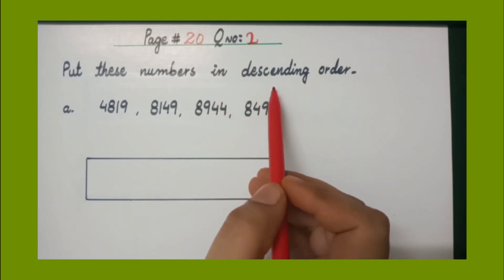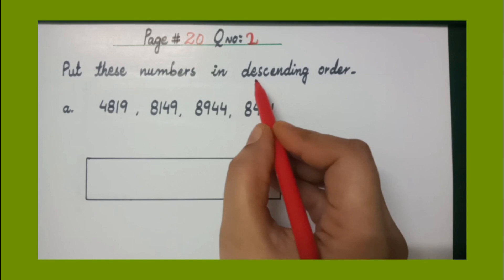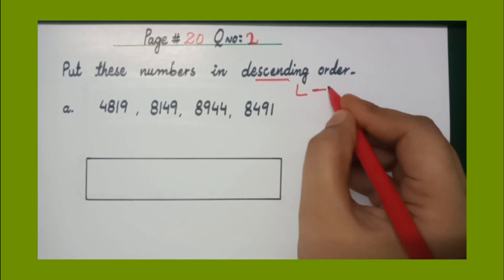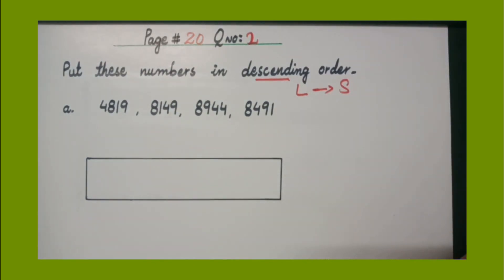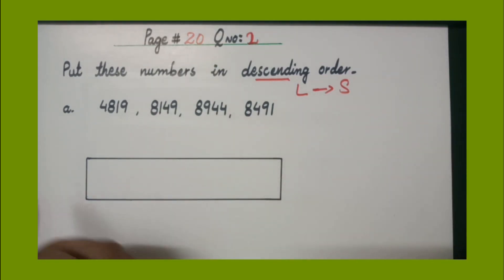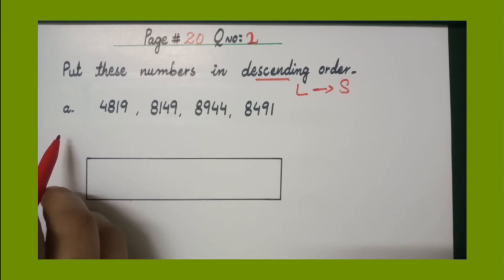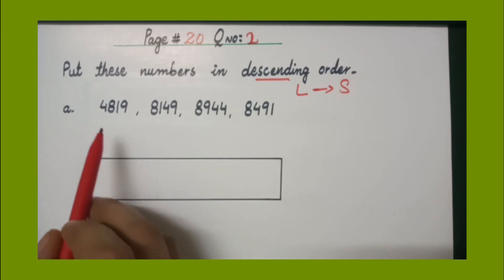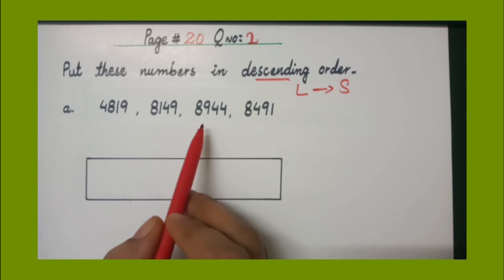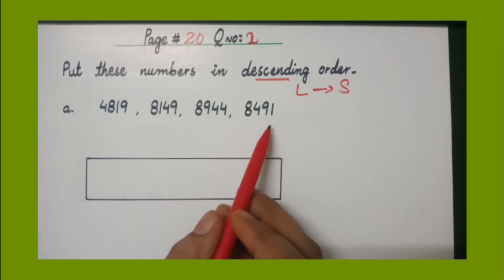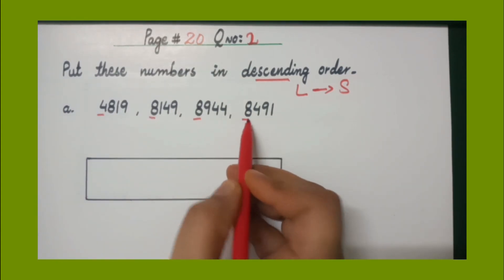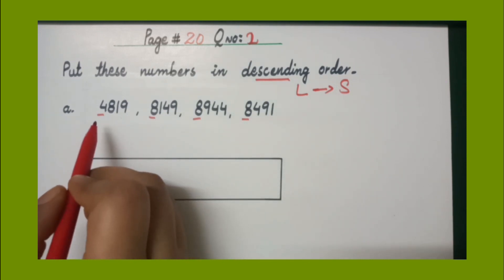Now question number 2 of page 20: put these numbers in descending order. Descending means largest digit to smallest digit. Let's solve part A. We have: 4,819; 8,149; 8,194; 8,944; and 8,491.